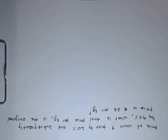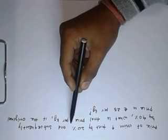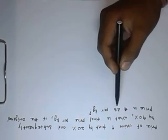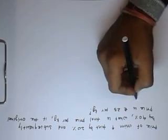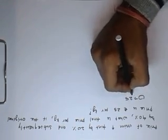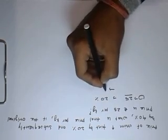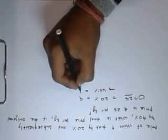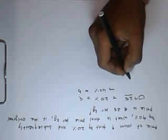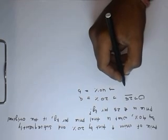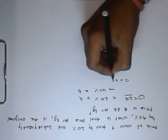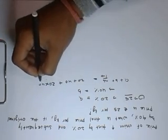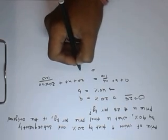The price of onion is increased by 20% and then by 40%. What would be the price of onion if the original price is ₹25 per kg? So A = 20% and B = 40%. The net change = A + B + AB/100 = 20 + 40 + (20 × 40)/100 = 68%.